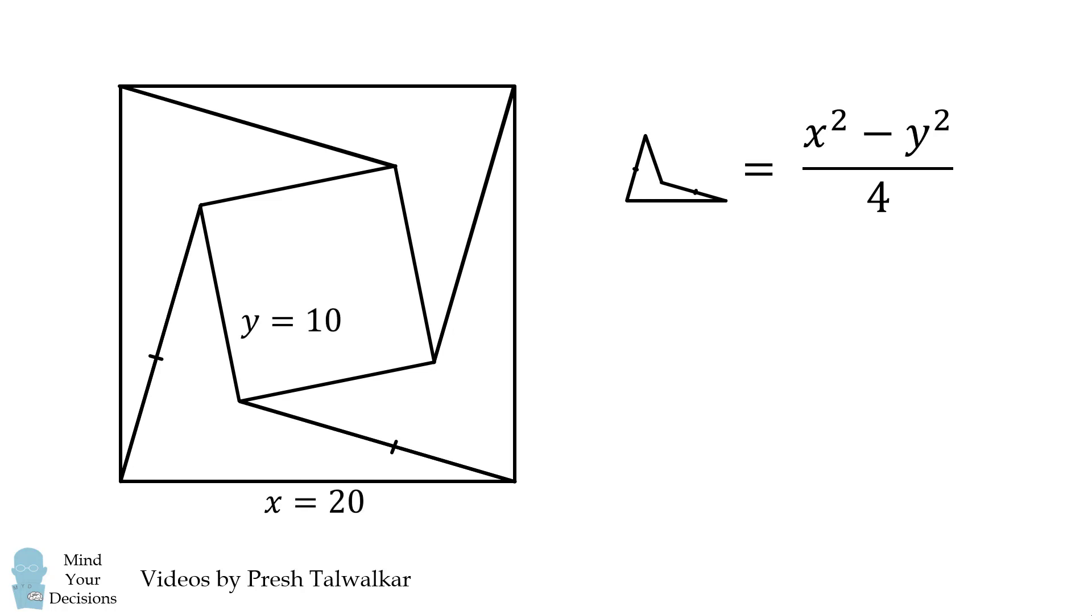We can then substitute in particular values and solve the original problem that the area of the quadrilateral is equal to 75.